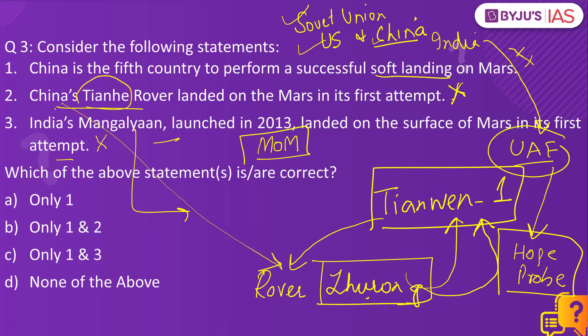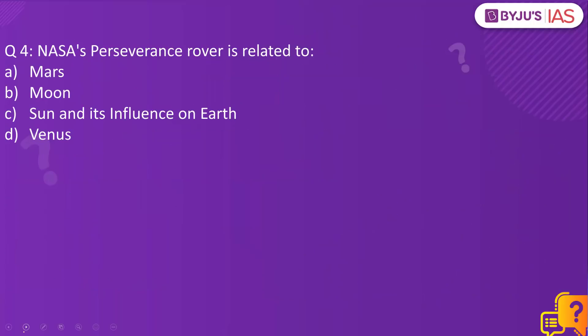Tianhe is actually the first module of China's permanent space station. So all these statements are incorrect — D, none of the above, is the right answer.